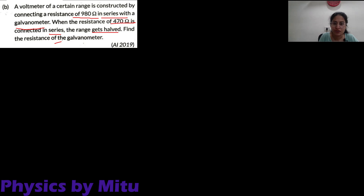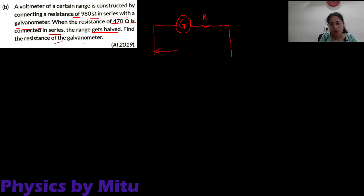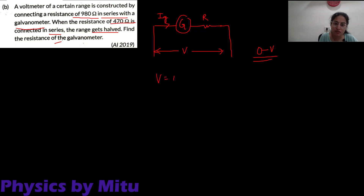What is the theory of conversion of galvanometer into voltmeter? We connect a high resistance in series — because voltmeter has very high resistance. So, if the range is 0 to V and IG is the current which gives full-scale deflection in the galvanometer, we can say V is equal to IG into (G plus R).